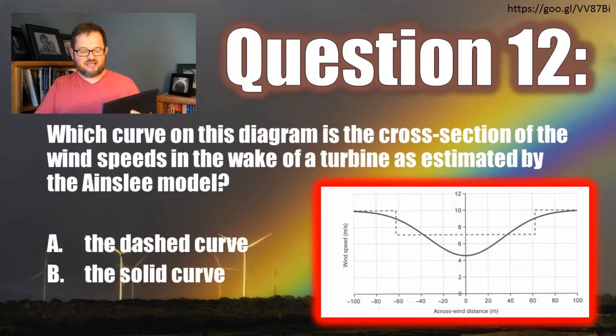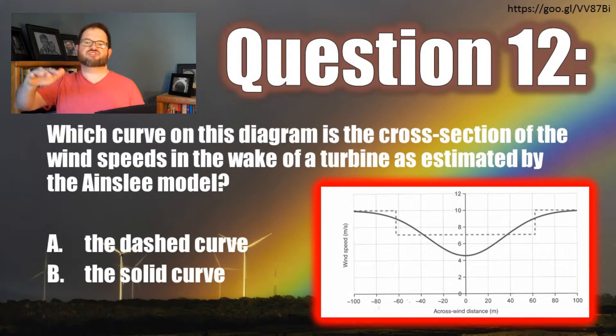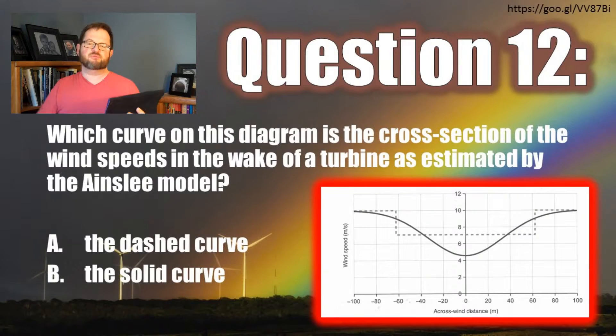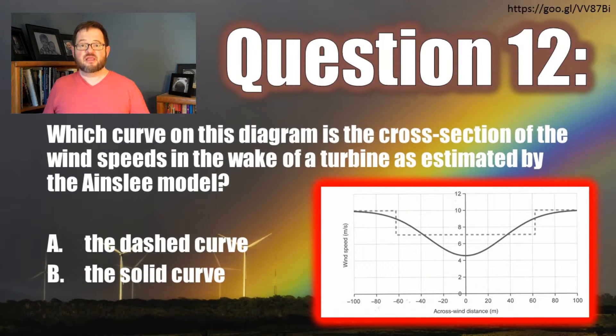Good job. It's got to be that solid curve because it's the one with a Gaussian distribution that dips down lower than what we see from the Enno-Jensen model. It's got all the properties of a good Ainsley model.